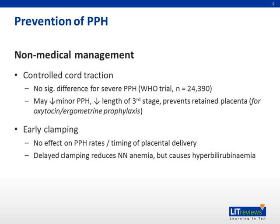For non-medical management, the first type is controlled cord traction. This gives no significant difference for severe PPH in the WHO trial, where a large number of patients were studied. It may decrease the incidence of minor PPH and decrease the length of the third stage of labor, thereby preventing retained products of conception such as the placenta. Early clamping has been found not to have any effect on PPH rates and the timing of placenta delivery. Delayed clamping reduces neonatal anemia but causes hyperbilirubinemia.